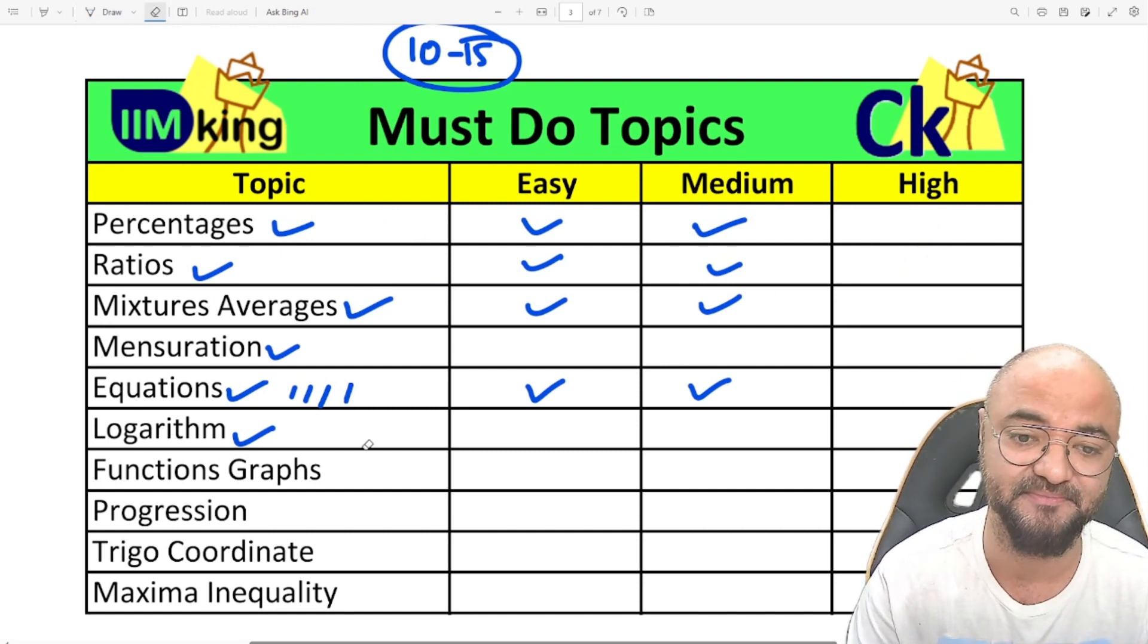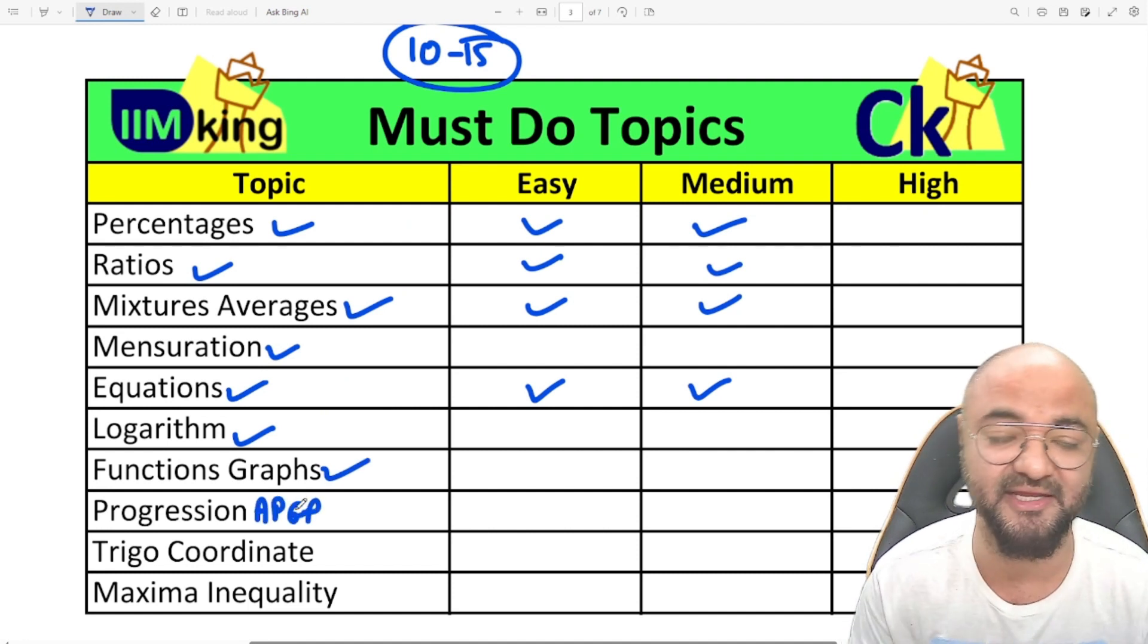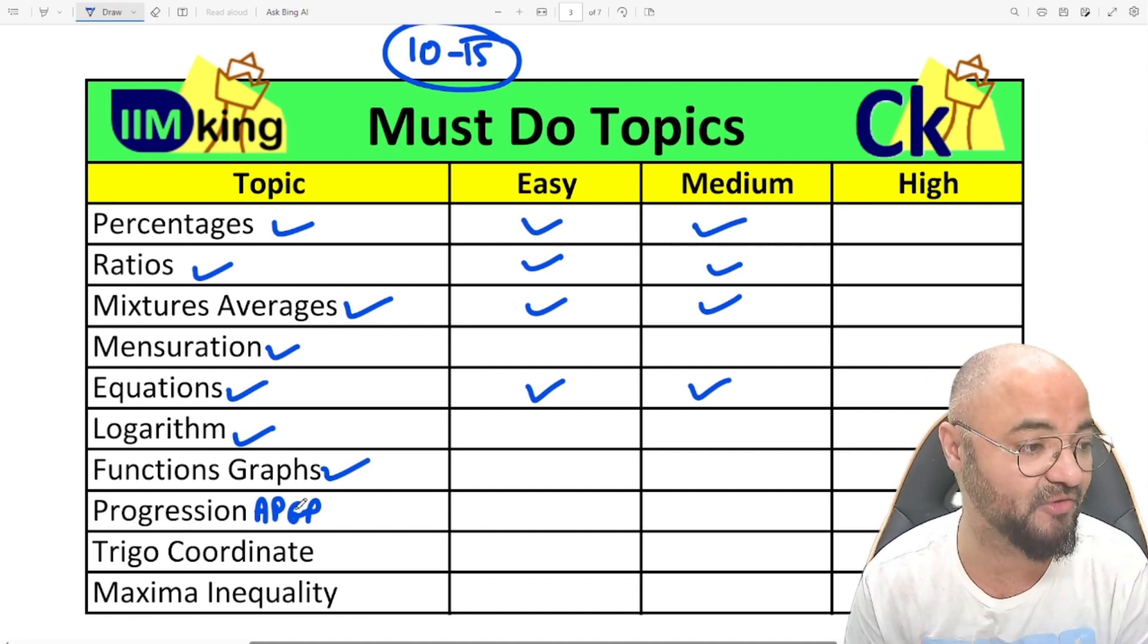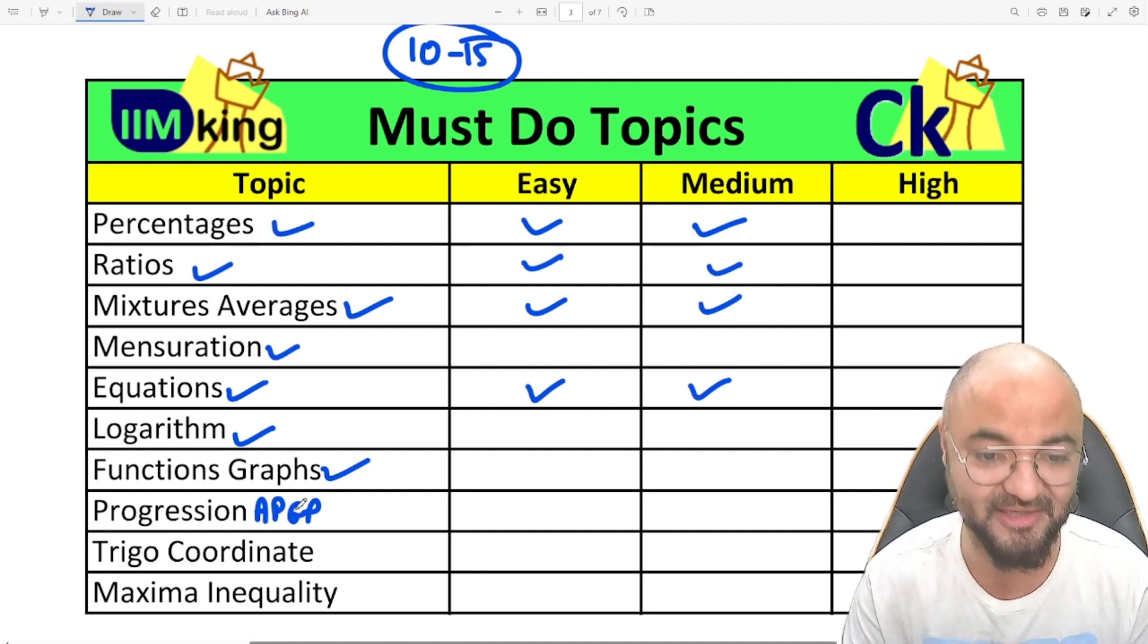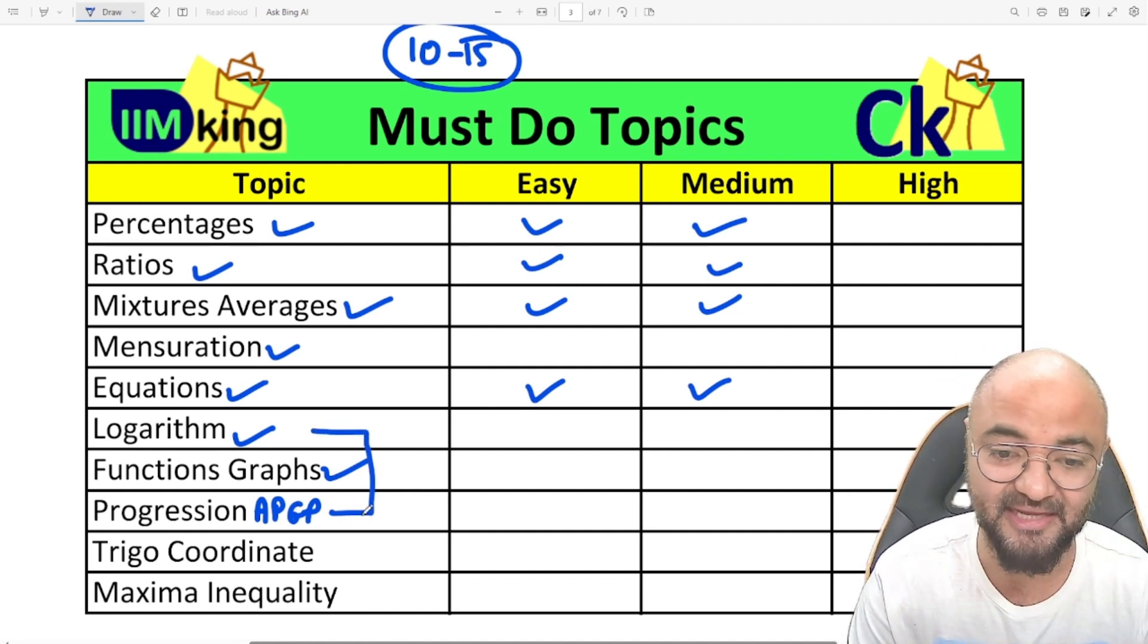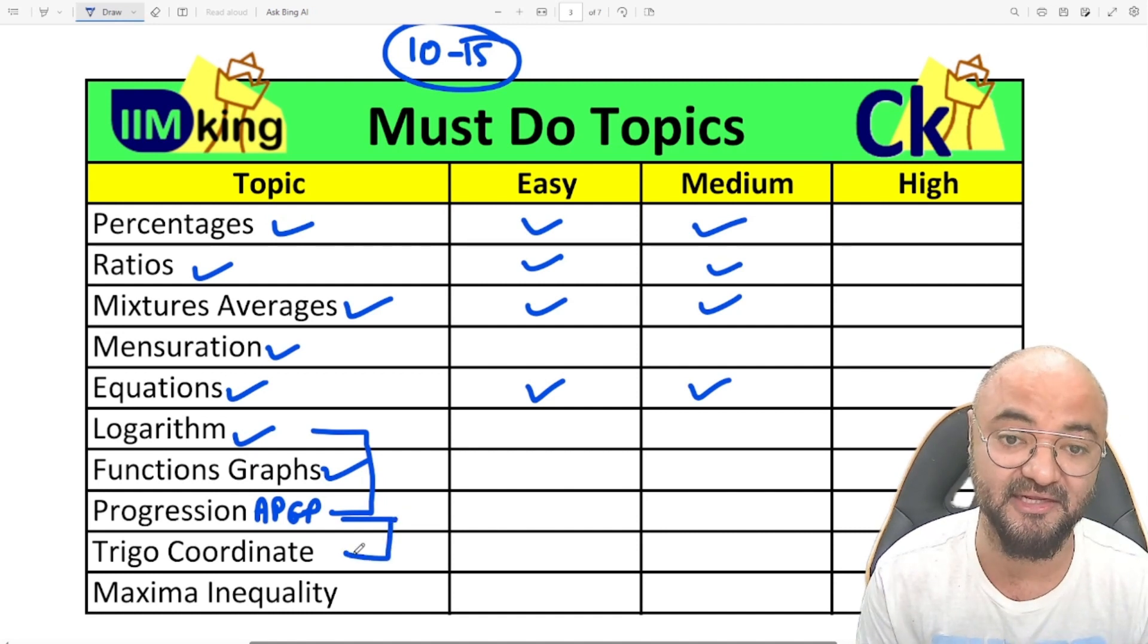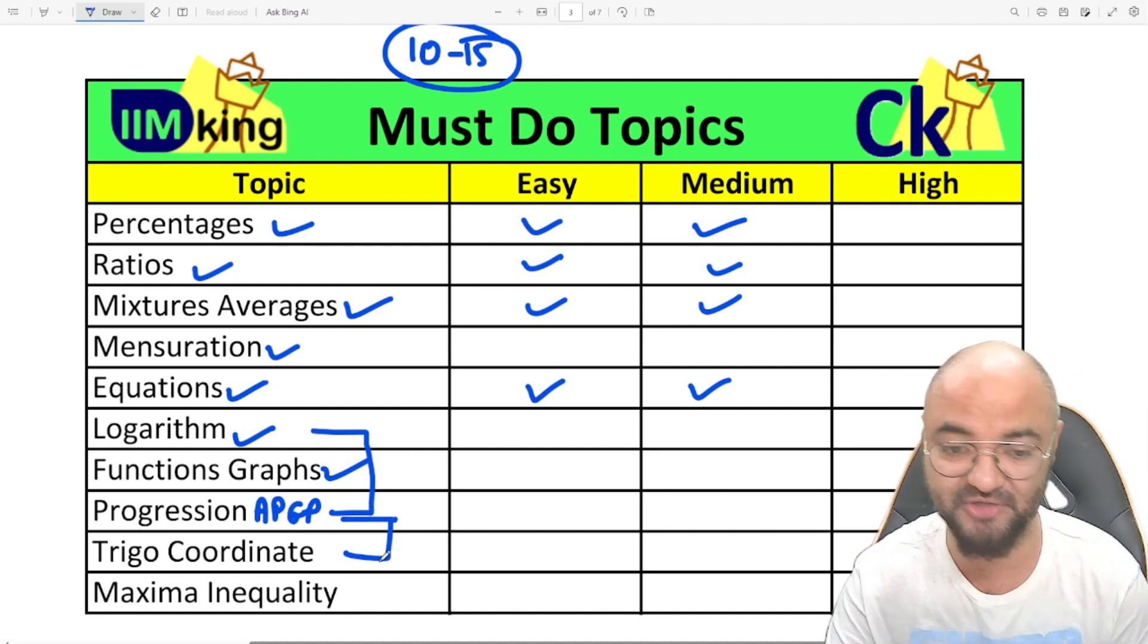Function graphs, AP-GP series—pick up any exam today, CAT to SNAP, XAT, CMAT, CET. AP-GP is one of the hottest topics coming in the exam. Again, AP-GP will not come alone. AP-GP and logarithm is their favorite topic. Then AP-GP can be combined with trigonometry, coordinate geometry—like three points are in the AP series. If I'm doing the basics or medium level, I'm able to survive the complete paper.